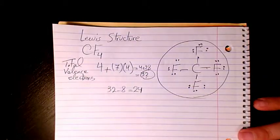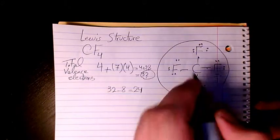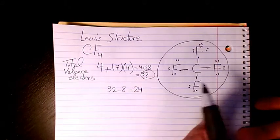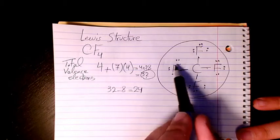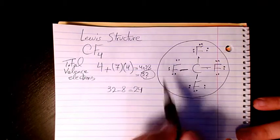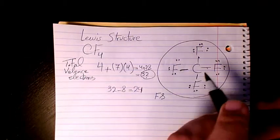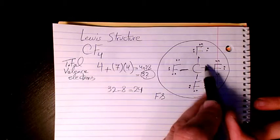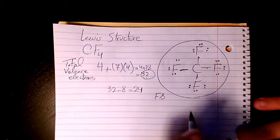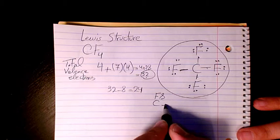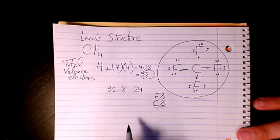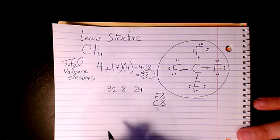So that's the Lewis structure. And if you want, you can check if the octet rule is valid. For fluorine, as you see here: 2, 4, 6, and 8—8 electrons. And for carbon we have 1, 2, 3, 4 bonds, and times 2 is gonna be 8. That's valid too. That's the Lewis structure for CF4.